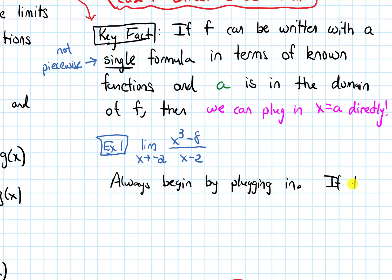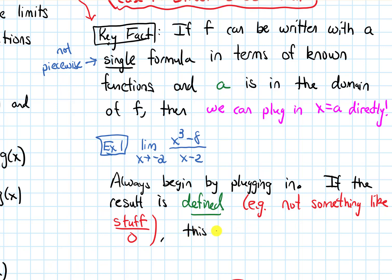If we do that and the result is defined—by that, I mean not something like stuff over 0, because if you had 0 on the bottom of a fraction, that would be undefined—so if you can plug in and get some number that's defined, then this is the answer. That will be our limit.